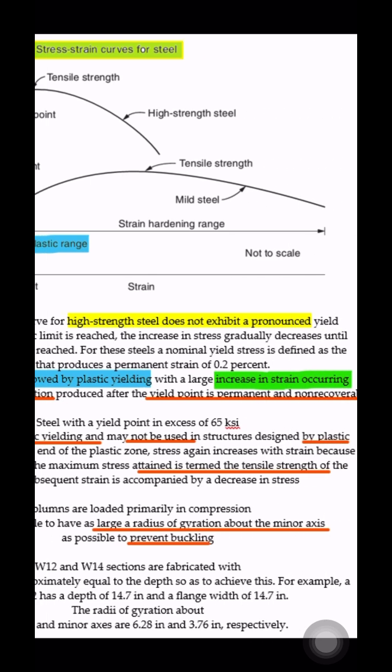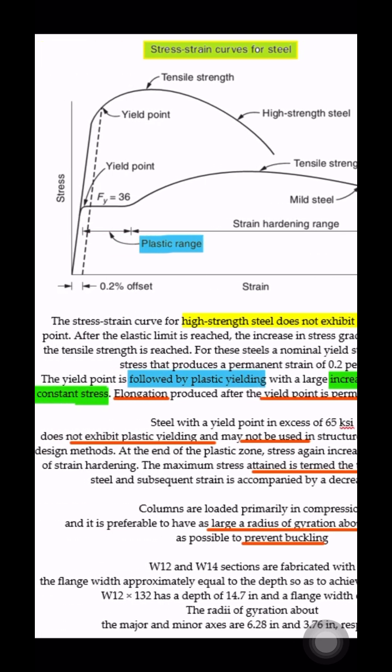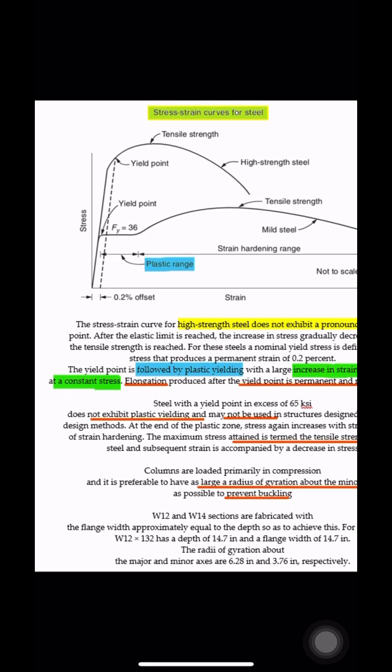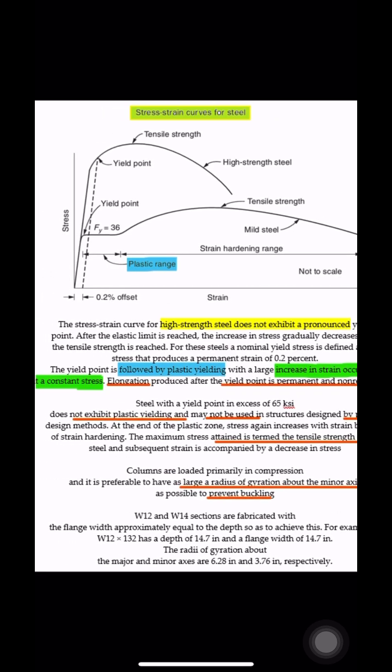Steel with a yield point in excess of 65 ksi does not exhibit plastic yielding and may not be used in structures designed by plastic design methods.